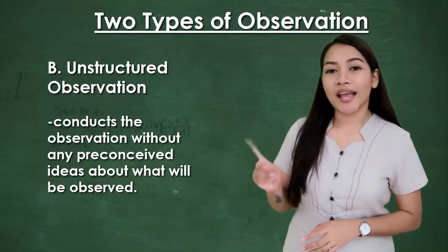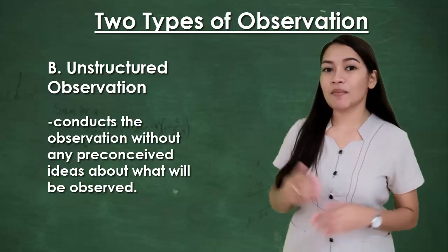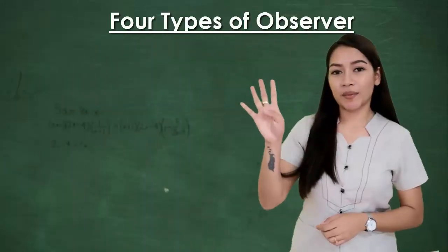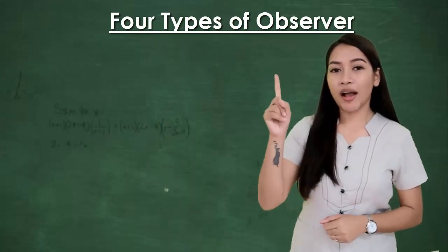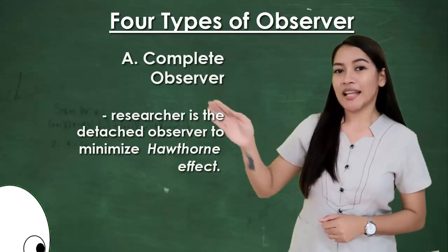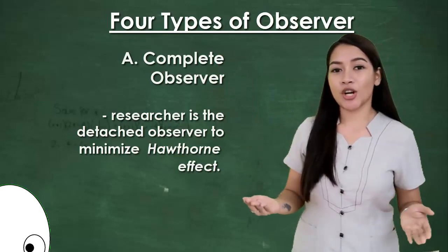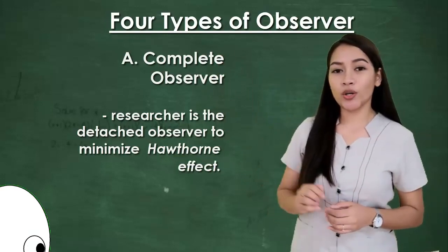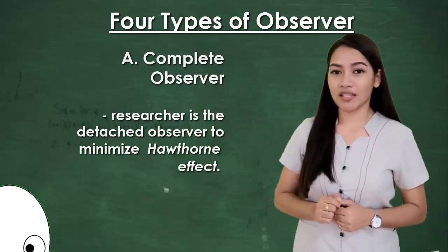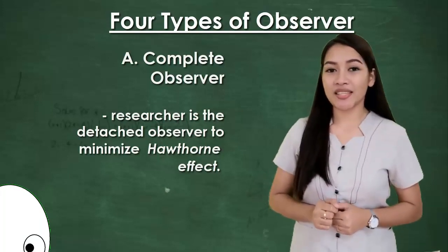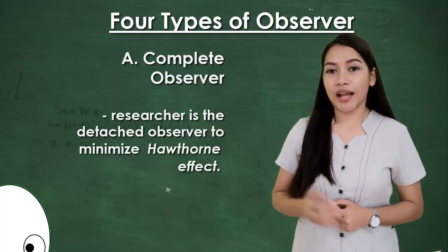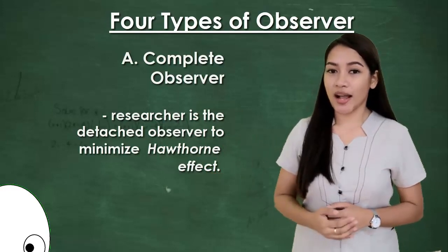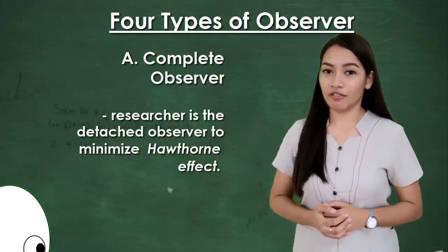There are four types of observer. Number one is the complete observer. This is a detached observer where the researcher is neither seen nor noticed by participants. It's one way of minimizing the Hawthorne effect, as participants are more likely to act natural when they don't know they are being observed.